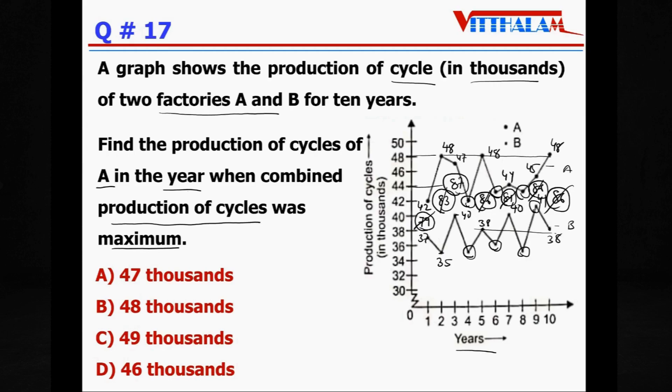So highest production is 87, which is in the year, which year? First, second and third year. Correct, third year means 47 and 40. So in that, what is the question? Find the production of cycles of A in the year when the combined production of cycle was maximum. So third year is maximum and during that how much A has produced? So this is A, so it is 47, and unit is 1000, so 47,000. So answer is A.